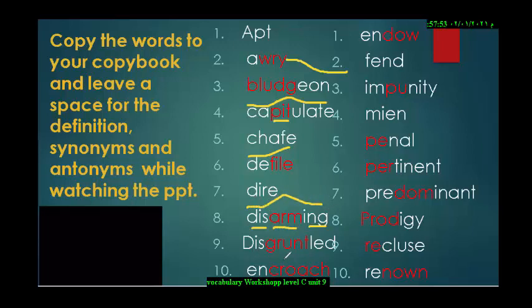Same thing with disgruntled. The stressed syllable is grunt. Word number ten, encroach. Start weak and then you go up. Word number eleven, endow. Start weak, then become strong.